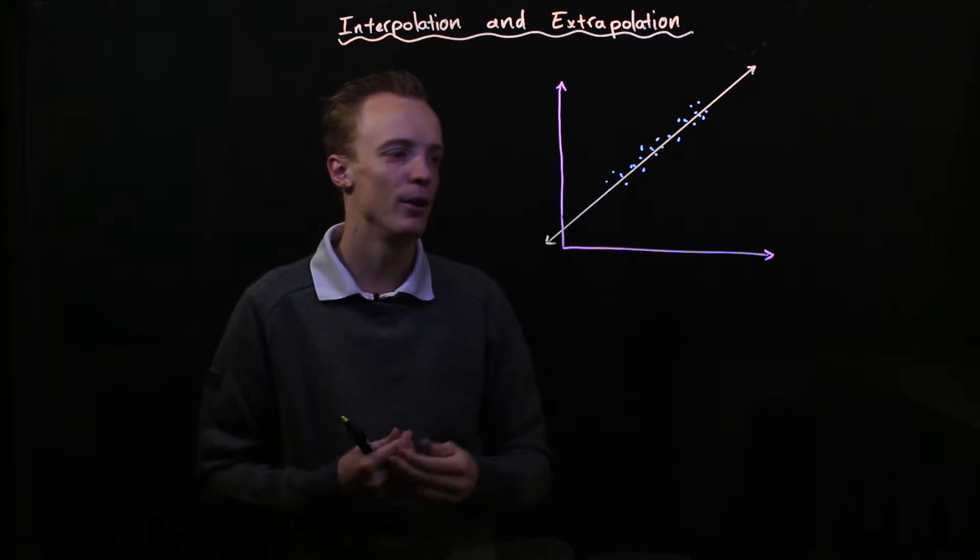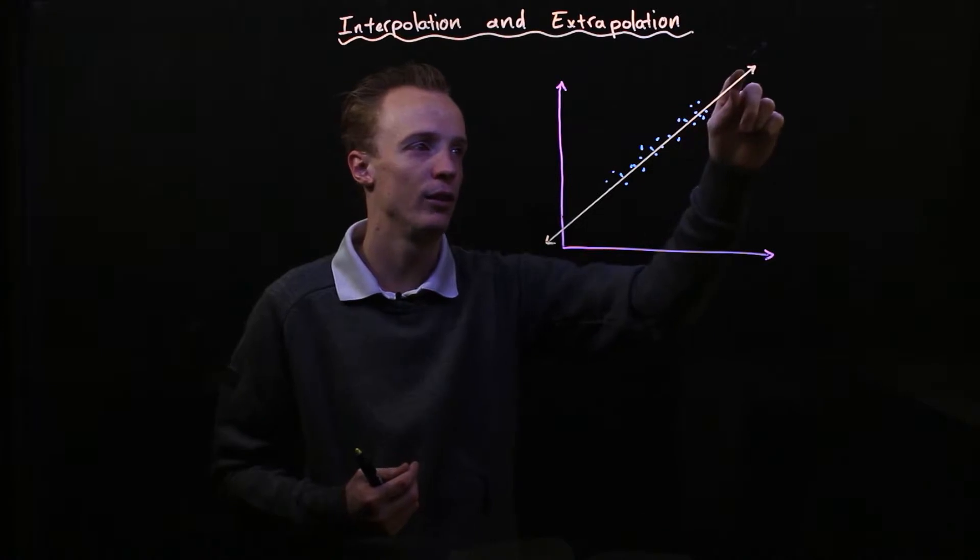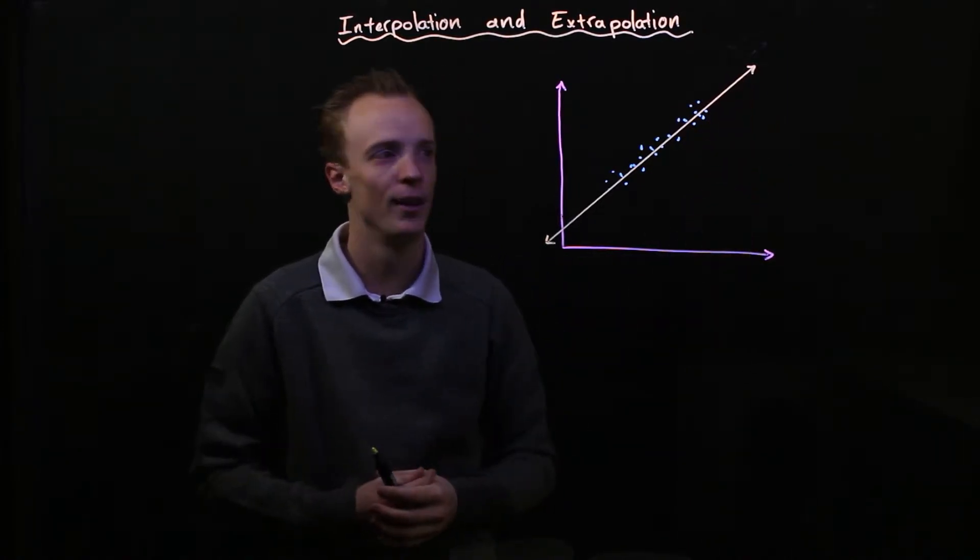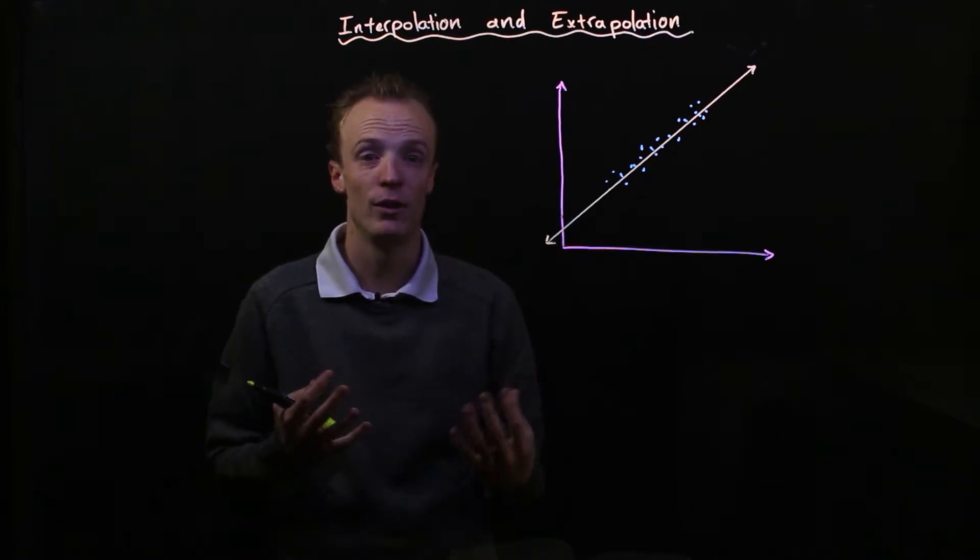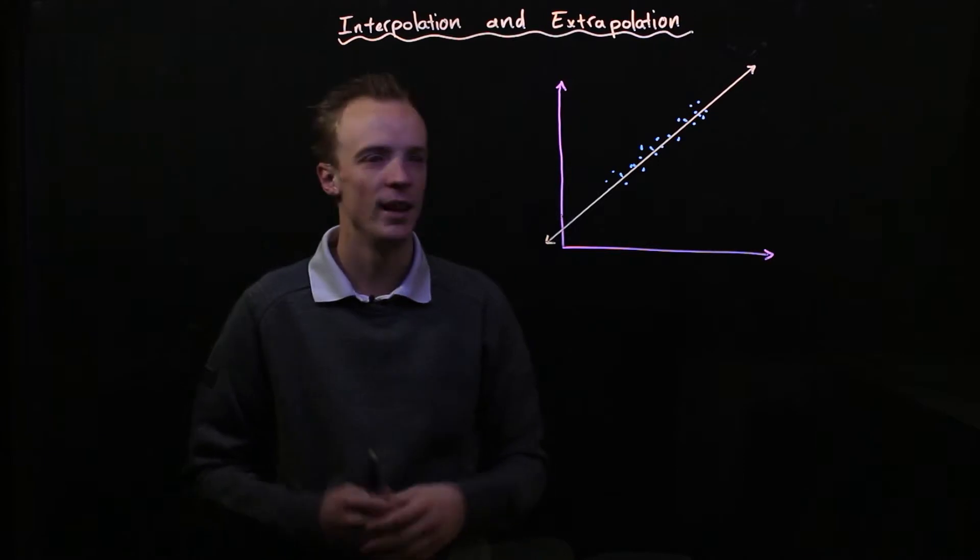Equally if I want to know what my x value is going to be when my y was up here I'd go across to that point and then down and I could make a prediction for my x value. Obviously if you've got an equation attached you could actually make your predictions that way as well.